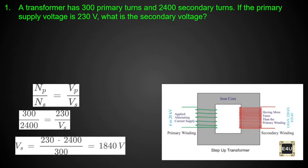The first question is: a transformer has 300 primary turns and 2400 secondary turns. If the primary supply voltage is 230 volts, what is the secondary voltage? In this question, there are 4 things involved.